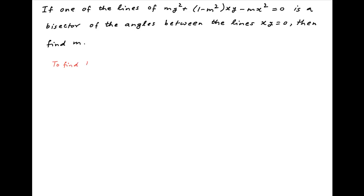The first step here is to find the bisector of the angles between the lines xy = 0. The lines making up xy = 0 are x = 0, which is the y-axis, and y = 0, which is the x-axis.